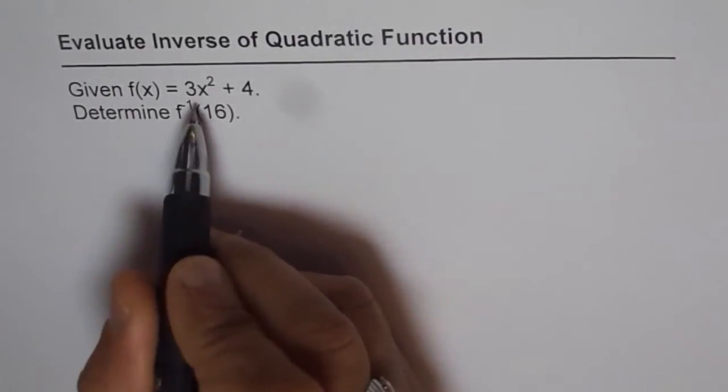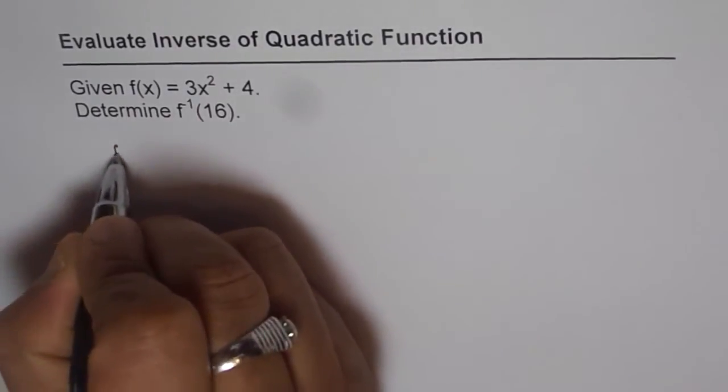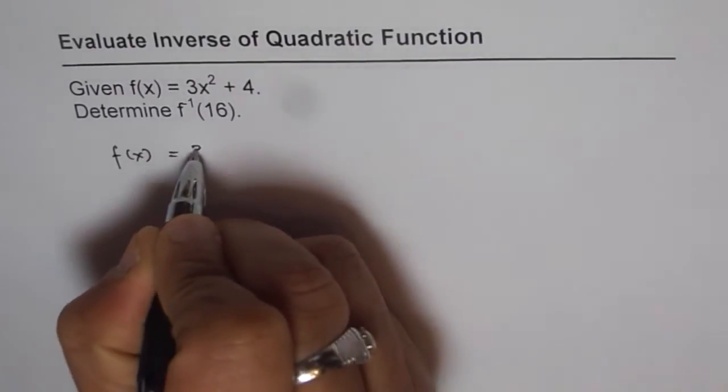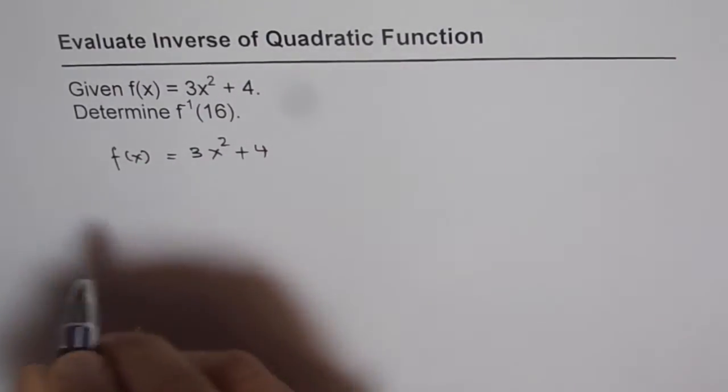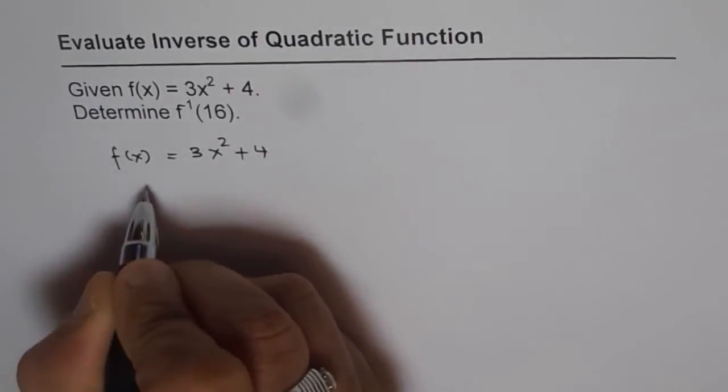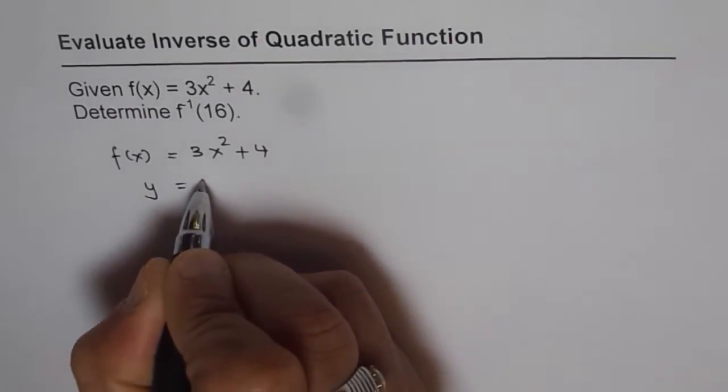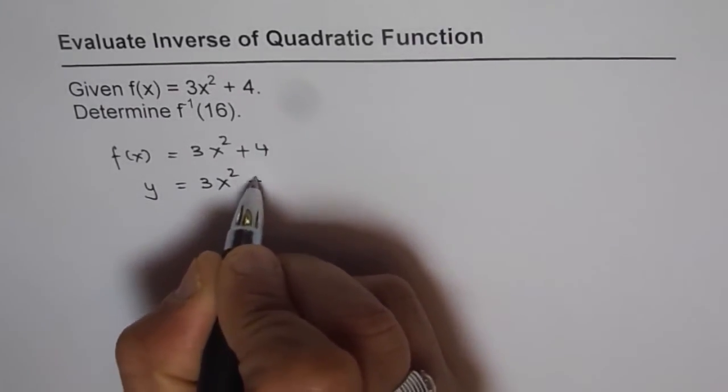So let's find the inverse of this function. We have f(x) equals 3x² plus 4. Steps to get inverses: write f(x) as y. So we have y equals 3x² plus 4.